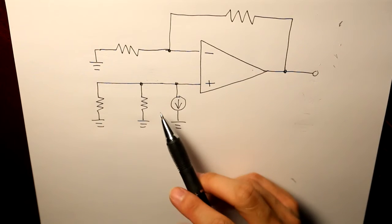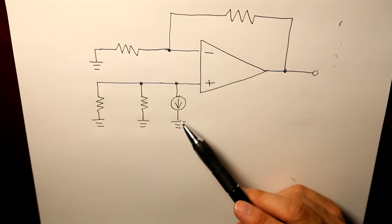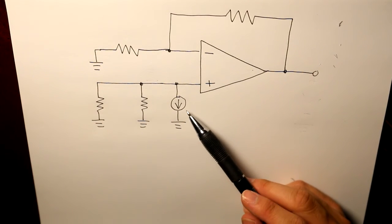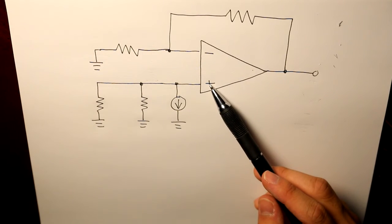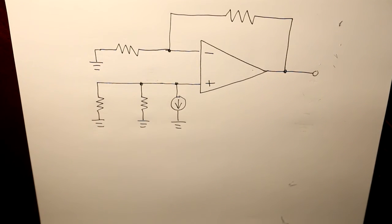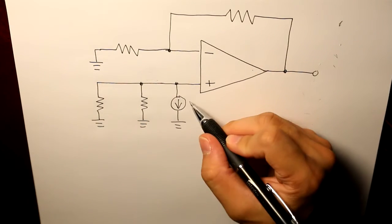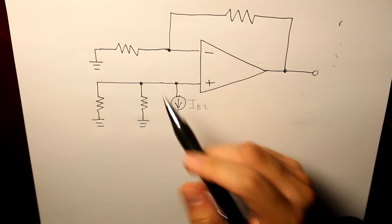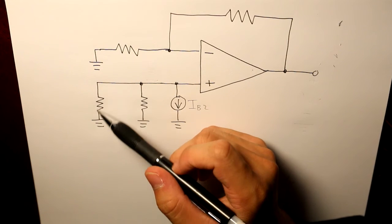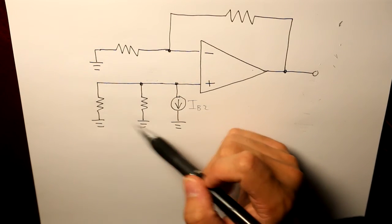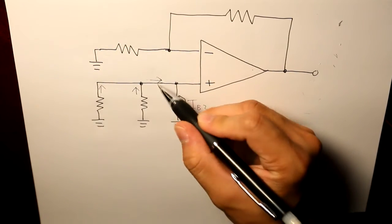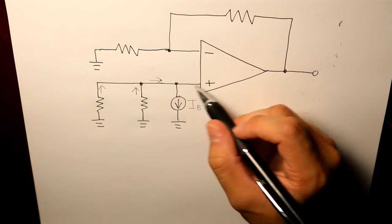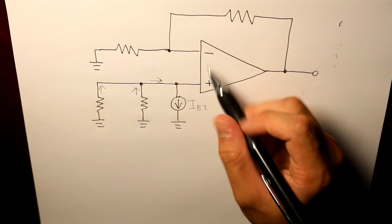So now we are moving on to our second biased current. This time it's located, connected with the positive input terminal. And as you can see, this is the current IB2, and essentially there's going to be current coming out from the ground to these two grounds, and then entering like this. And basically there's no current going into the op amp.